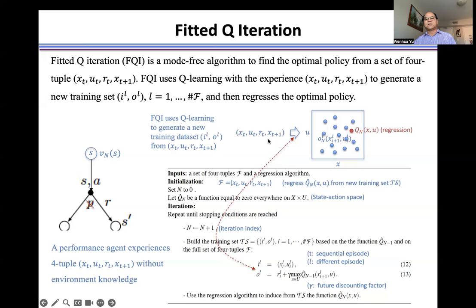For example, this experience, that's four-tuple. We know this four-tuple. And then we know this is the current state and this is the action. And we know this reward R, and we know this next state.